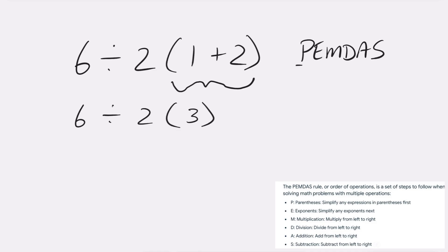The next letter in our acronym is E for exponents, but we do not have any in this problem. So the next order of operation is multiplication and division, which is worked from left to right. Let's rewrite our problem to make it more clear: 6 divided by 2 times 3.